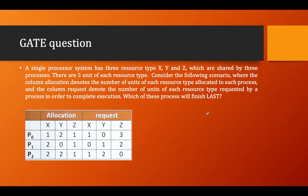This GATE question says that in a single processor system, there are three types of resources X, Y, and Z which are shared by three processes. There are different processes available and X, Y, and Z are the resources with five instances of each resource type.